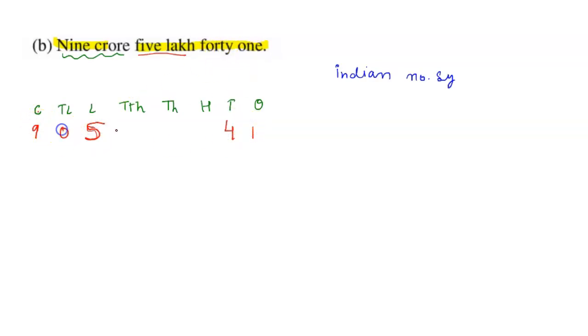Now in the empty places we're taking zeros. So we will write here the number is 9, 0, 5, 0, 0, 0, 4, 1. That is 9 crore 5 lakh 41.